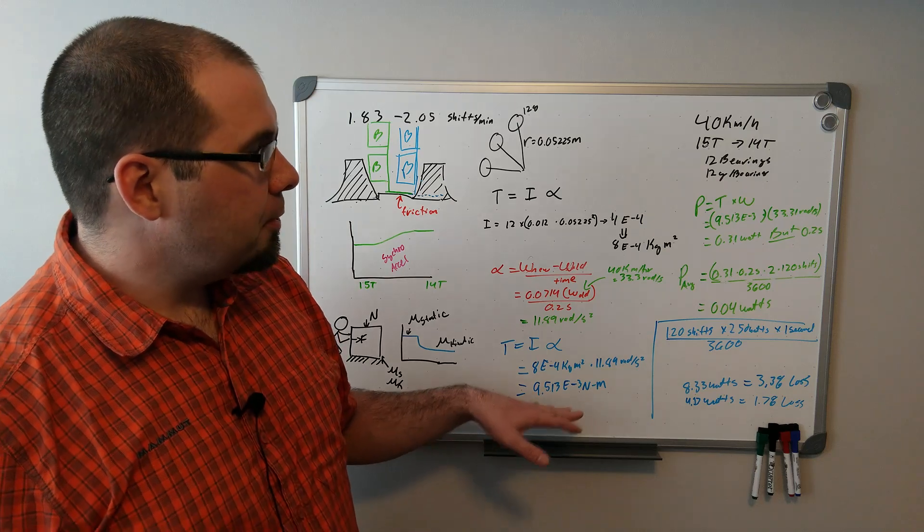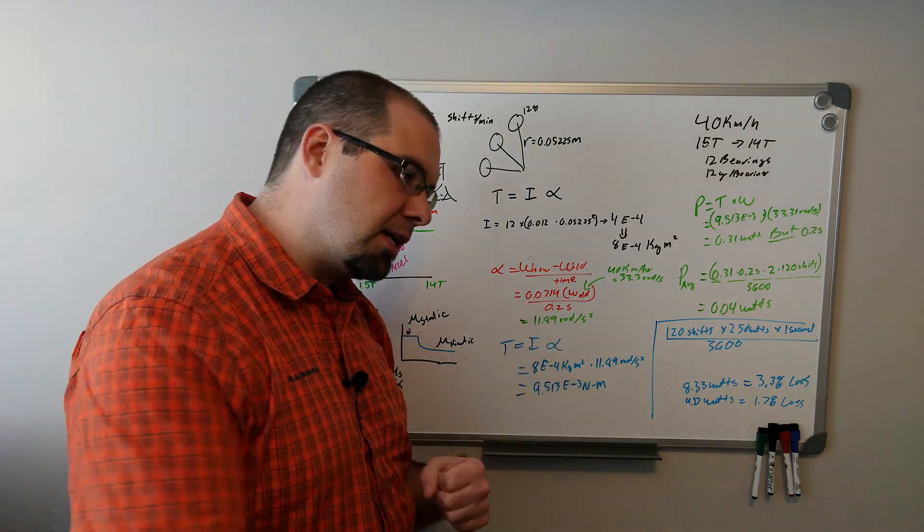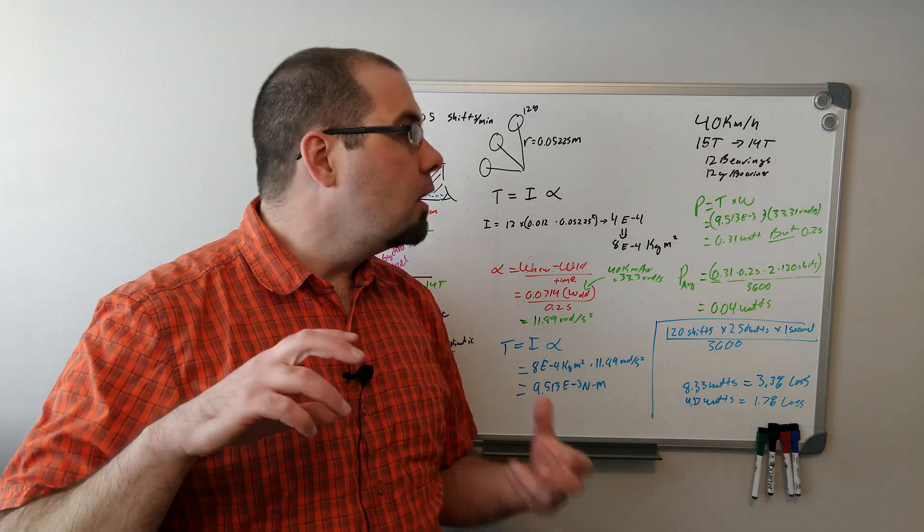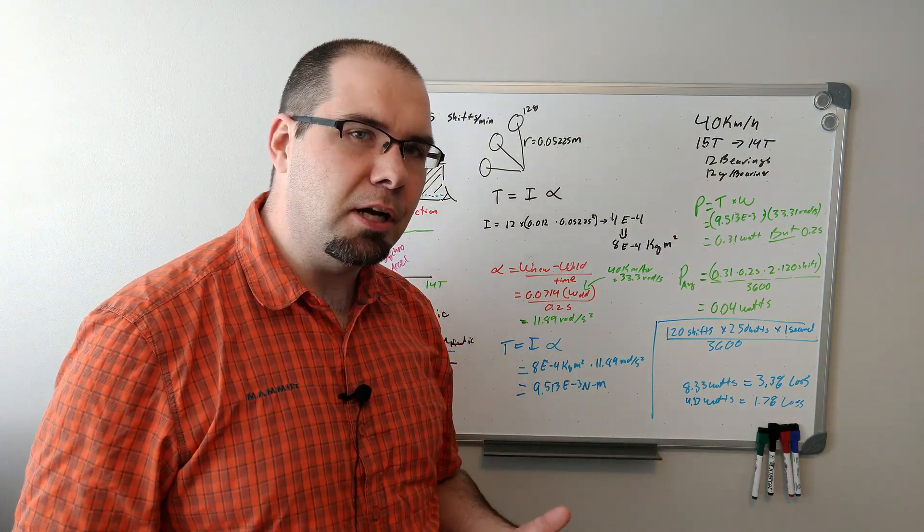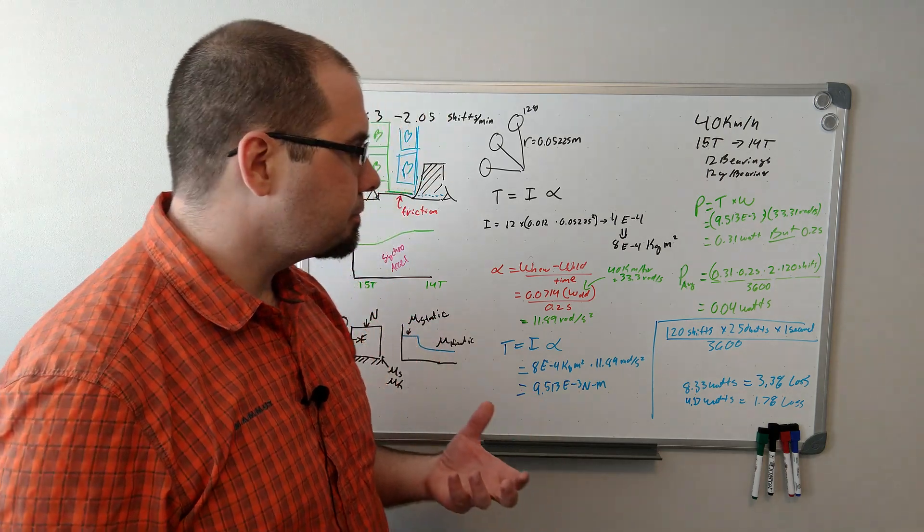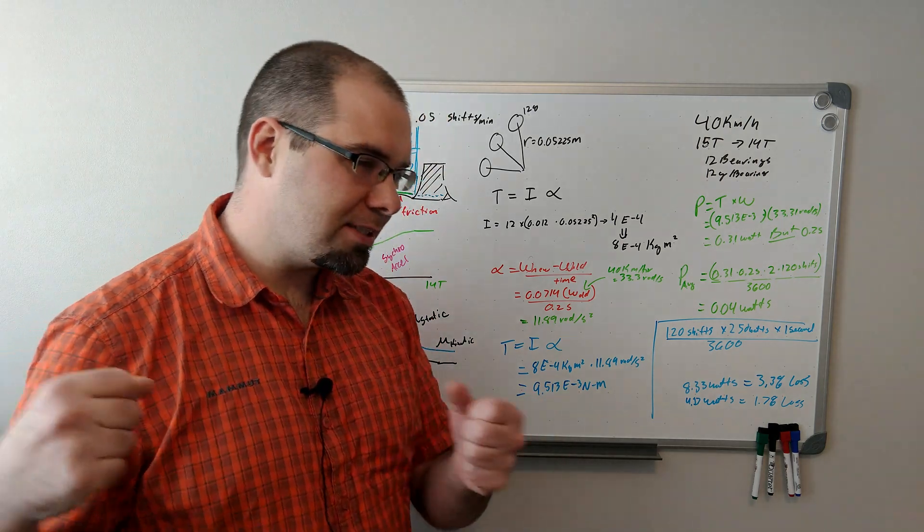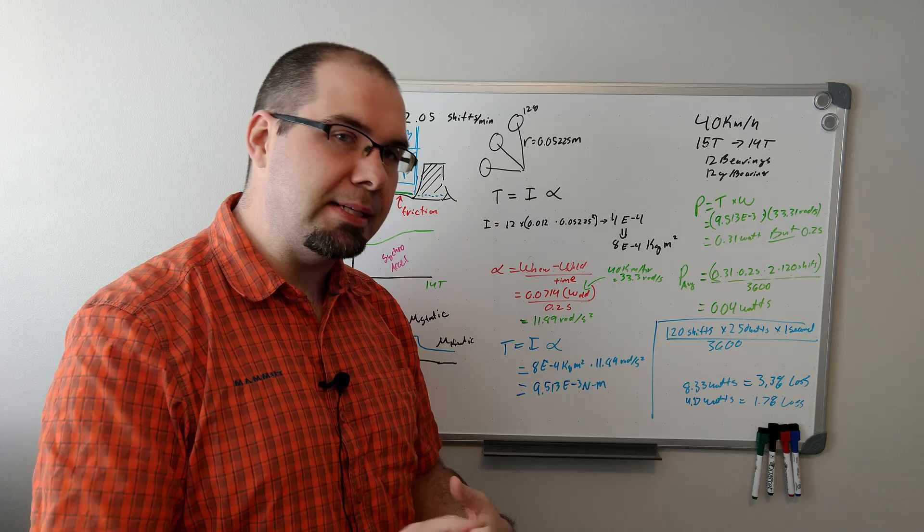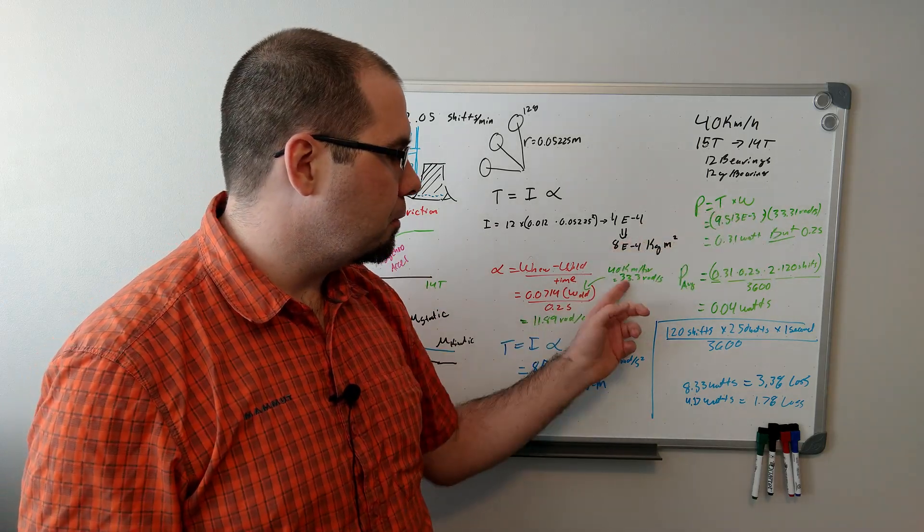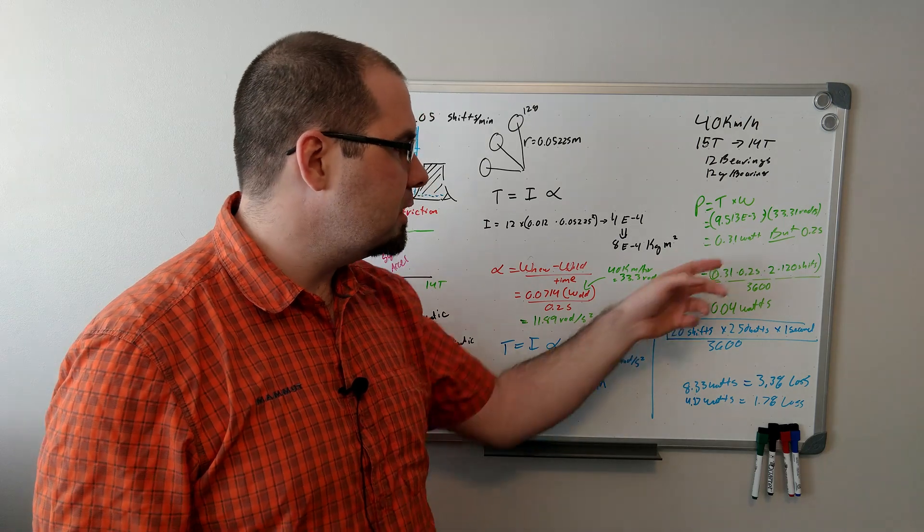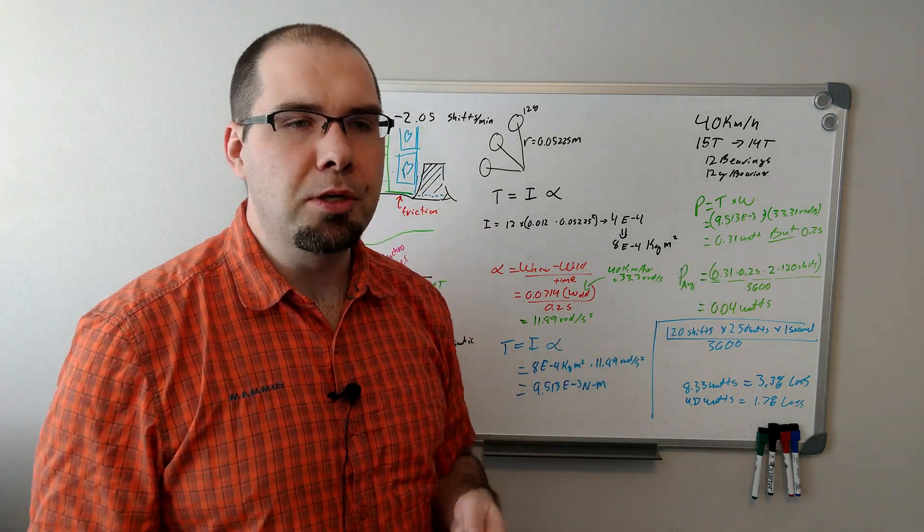Just like we did before, we had all those components. We know the time it takes. We know how fast things are going. We know that the energy for the shift is actually going to come from our drivetrain. It's actually going to slow the bike down as it speeds this up through energy loss. The power is equal to torque times omega. We knew what our omega was. We knew what our torque is. And it's 0.31 watts.